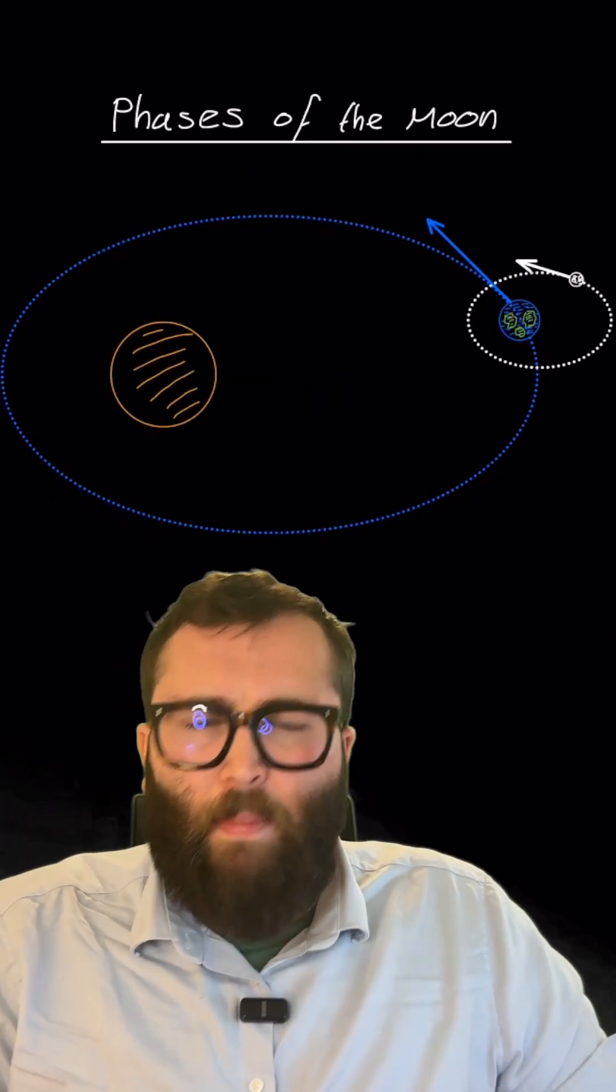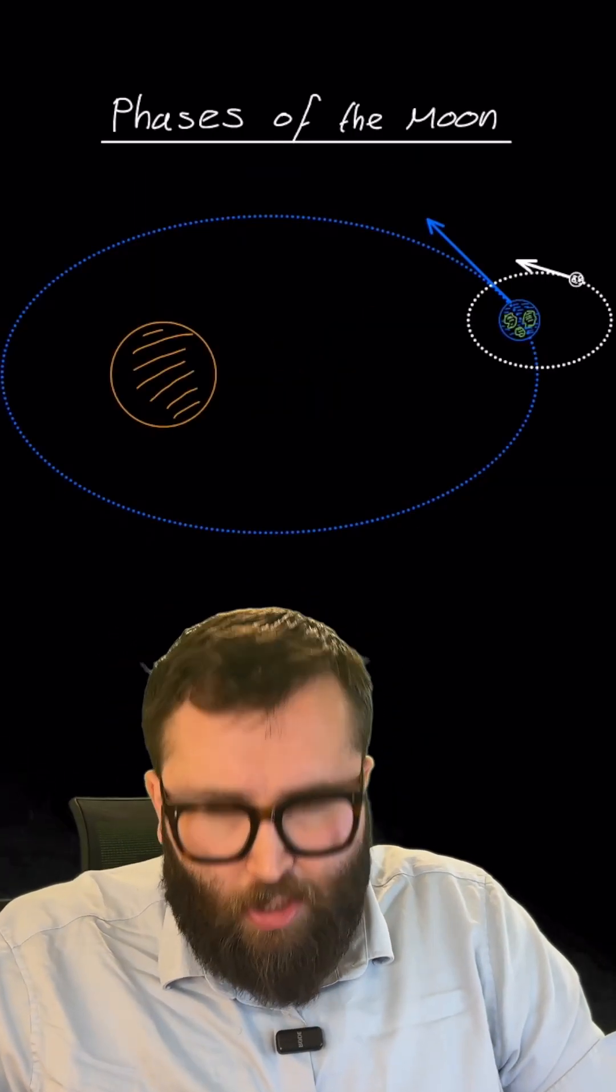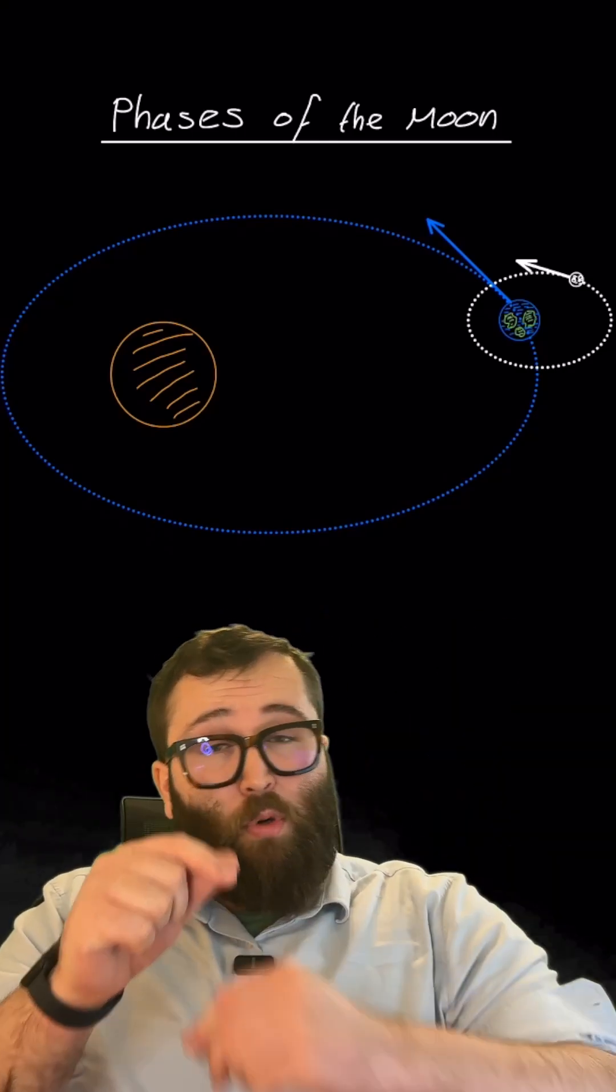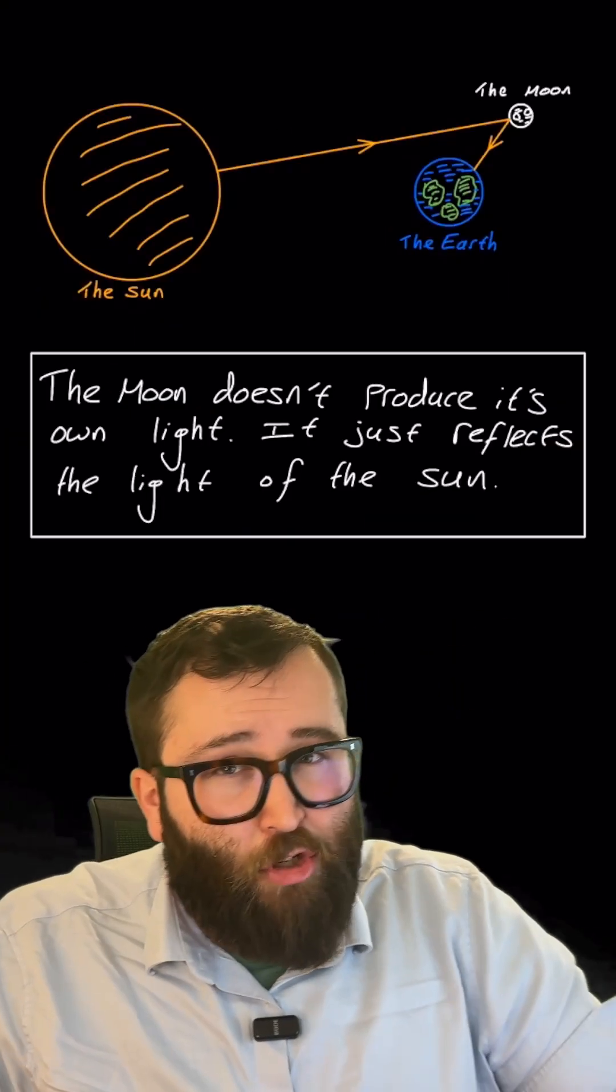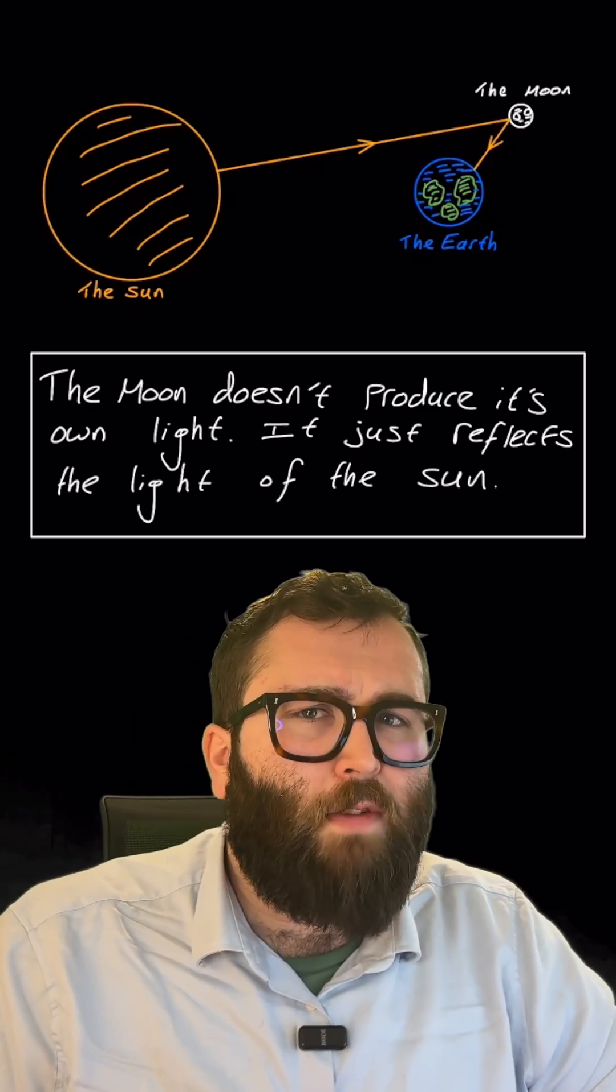To answer this we've got to think a little bit about what causes the moon to change in appearance. As we know, the earth orbits around the sun and the moon orbits around the earth. Additionally, the moon doesn't actually produce any of its own light.